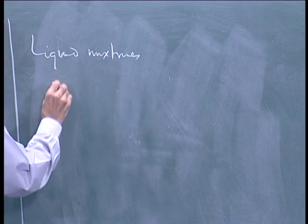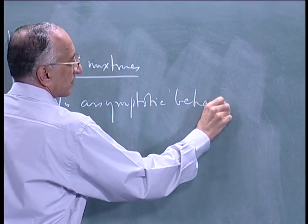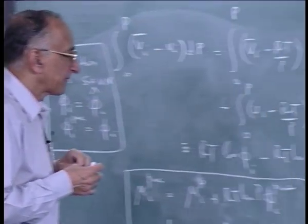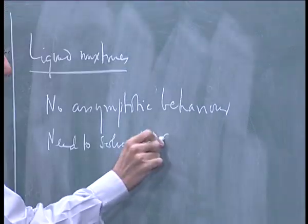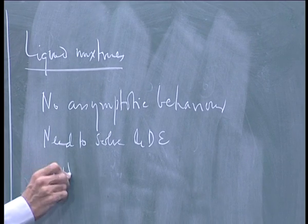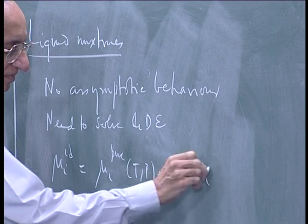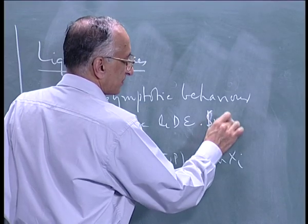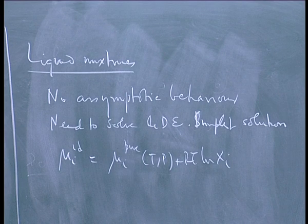For liquid mixtures, first: no asymptotic behavior. If you are able to find an asymptotic behavior, you are in for a Nobel prize. When the liquid domain has been covered, people have looked everywhere. So you need to solve the Gibbs-Duhem equation. What we do is use the simplest solution: mu_i ideal again.